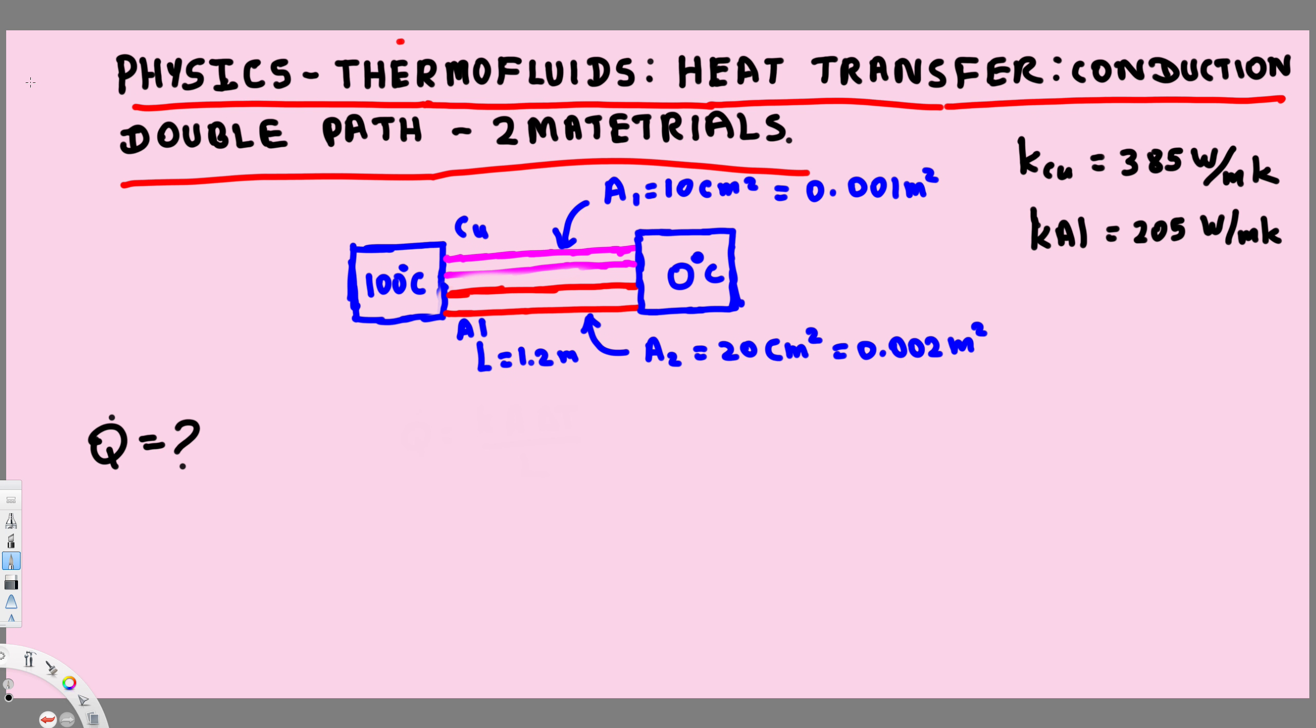Hey, what's going on guys? Let's do this problem right here. This question is asking to find out the heat transfer rate. Here we have two different materials: one is copper and one is aluminum. Both of the bars are connected to 100 degrees Celsius and 0 degrees Celsius.